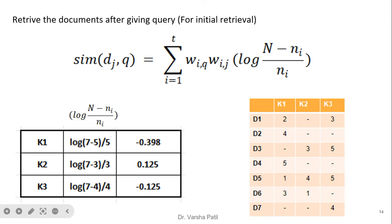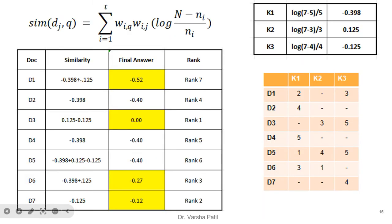For document D1, we calculate similarity with respect to the query. Since all terms are present in the query but K2 is absent in D1, we take the summation for i=1 and i=3 only. The intermediate value is log((N - Ni) / Ni). We already calculated intermediate values for all keywords. For D1, we add the first and third term values; for D2 we add the first term only. In this way we compute similarity for all documents and obtain the final similarity values.